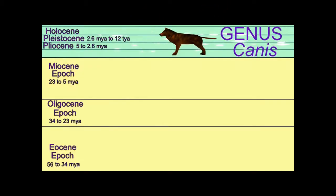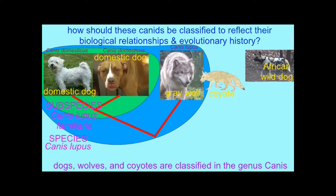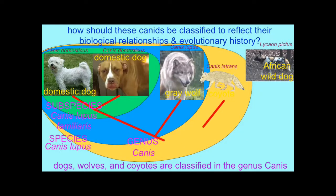Darwin also reasoned that not only could different breeds or subspecies of a species share a common evolutionary origin, but also that different species within the same genus — in this case the genus Canis — could share a common ancestor.